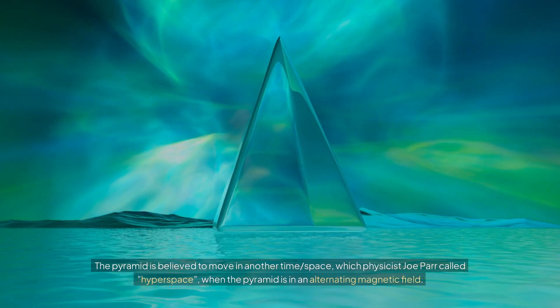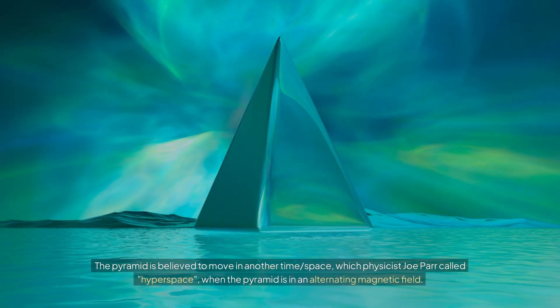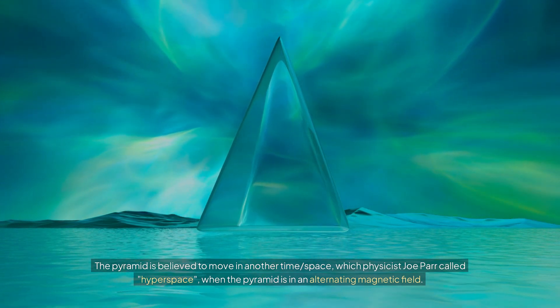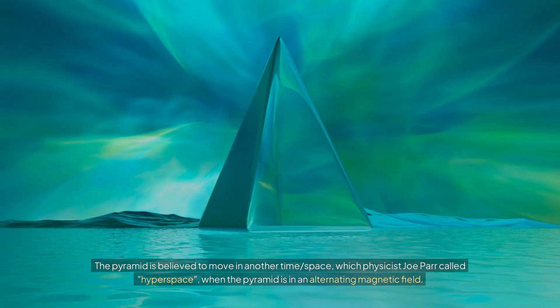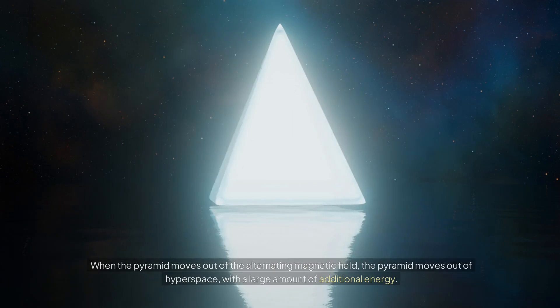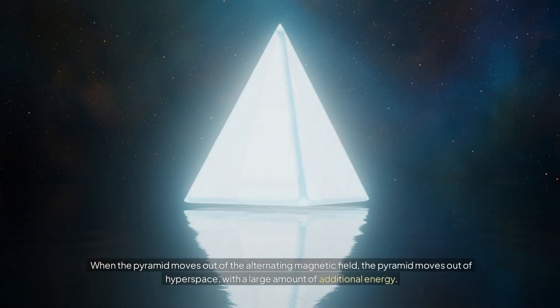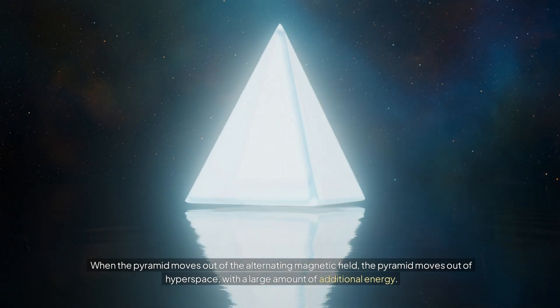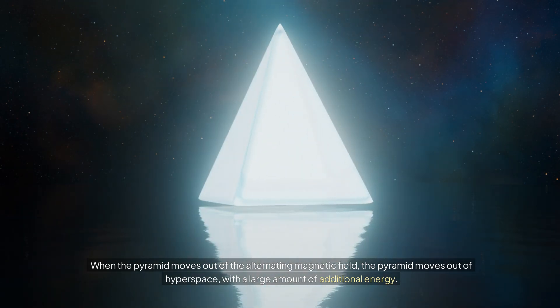The pyramid is believed to move in another time-space, which physicist Joe Parr called hyperspace, when the pyramid is in an alternating magnetic field. When the pyramid moves out of the alternating magnetic field, the pyramid moves out of hyperspace with a large amount of additional energy.